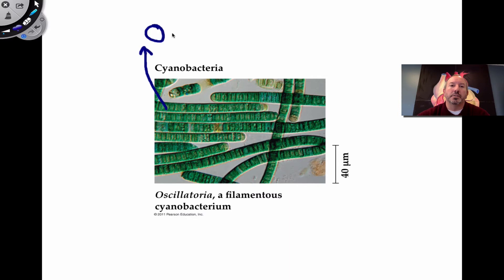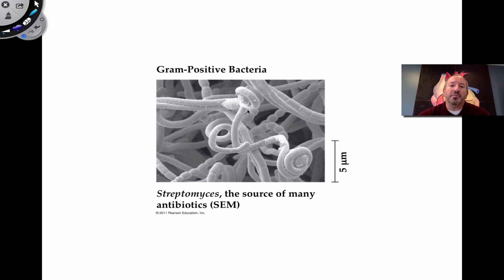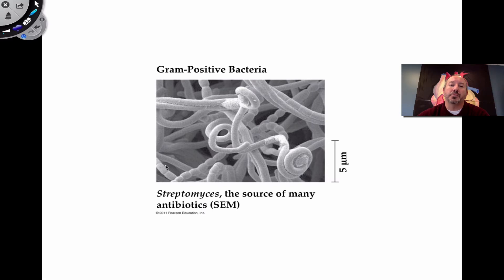They contribute a lot of positive to the world by producing a lot of oxygen, which is really important. This particular type of bacteria — Streptomyces — is kind of a misnomer because it was once thought to be fungi, hence the 'myces' in the name. But this gram-positive bacteria is the source of a lot of really important antibiotics that pharmaceutical companies use to help people who are infected with other pathogenic bacteria.